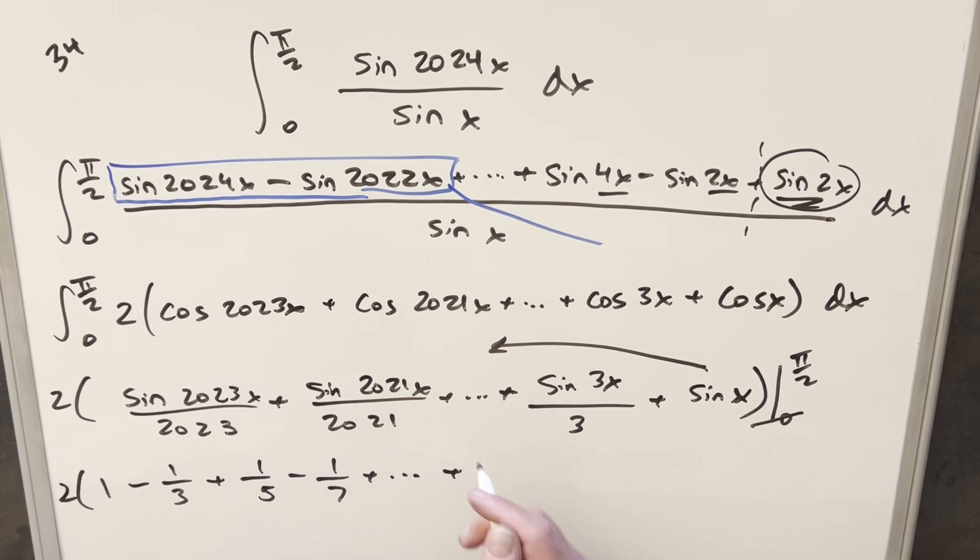Sine 2021π/2, that's going to be a 1. It gets a little confusing because the number is large and stuff. But then this one here, this is going to become a minus 1 over 2023.